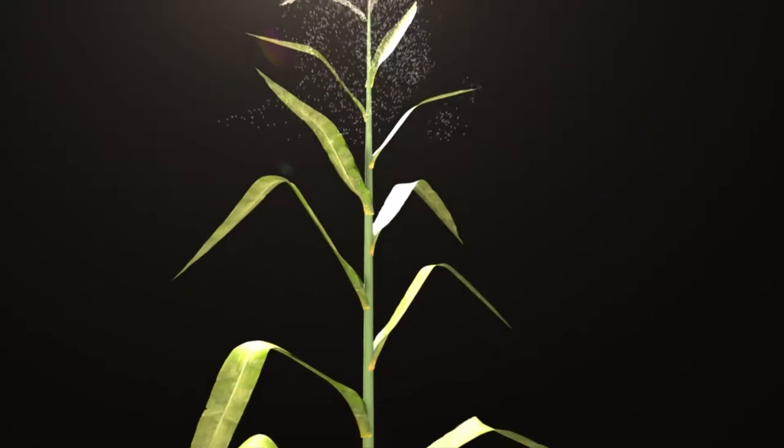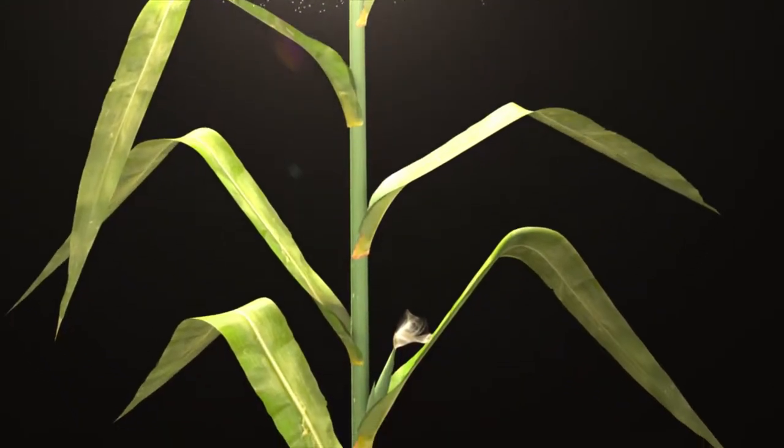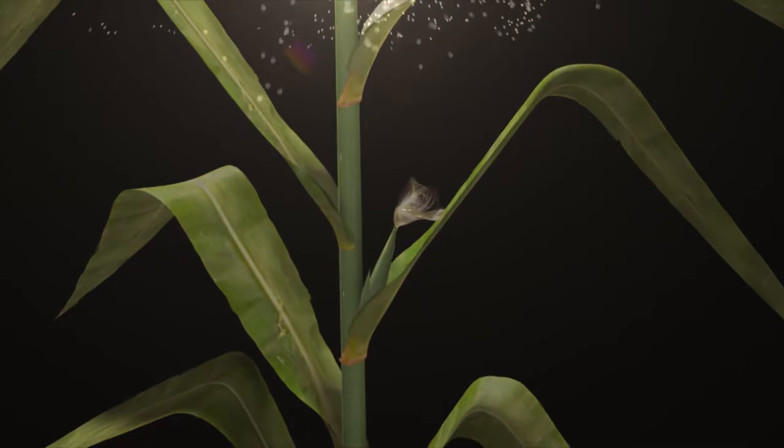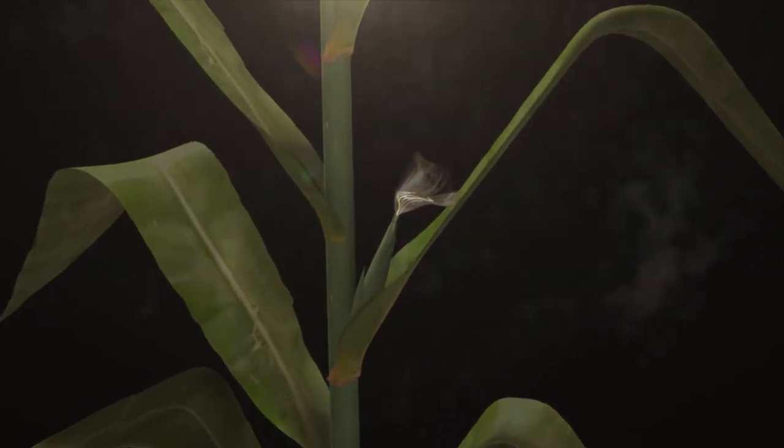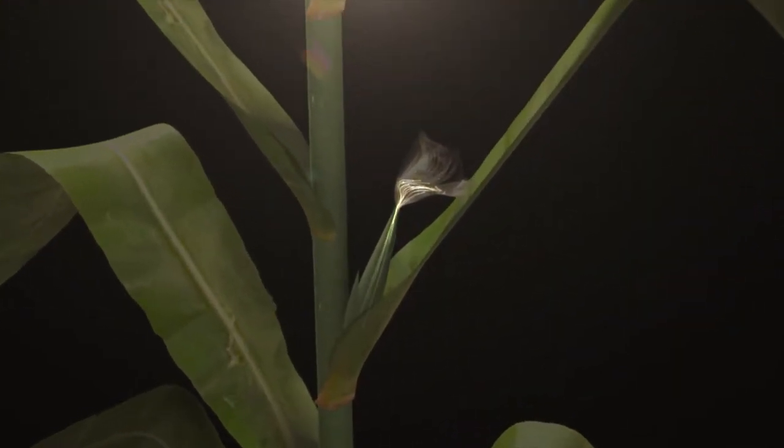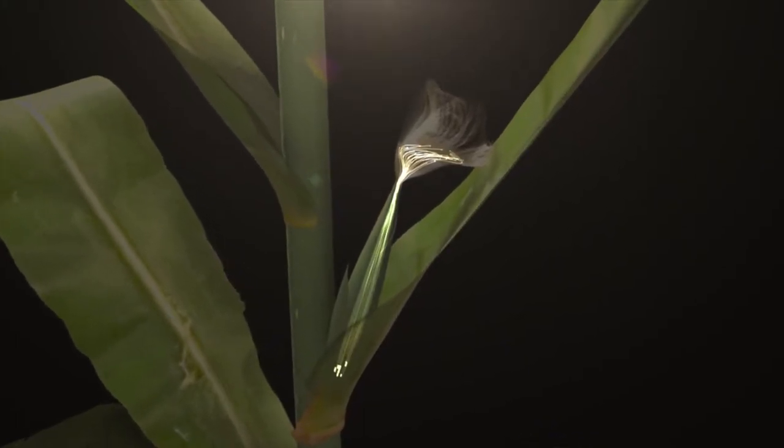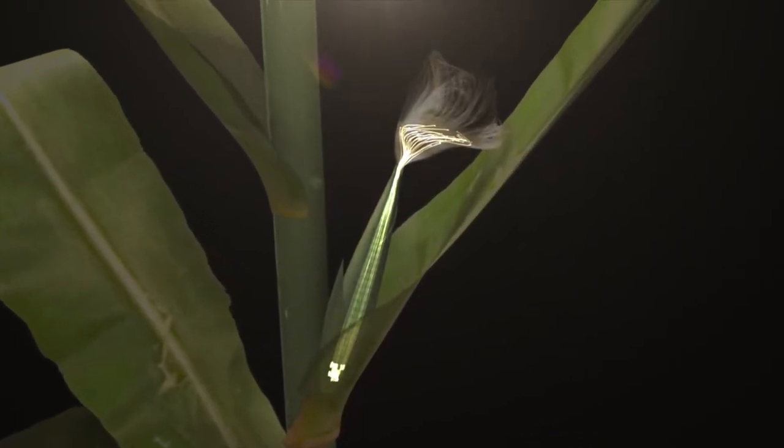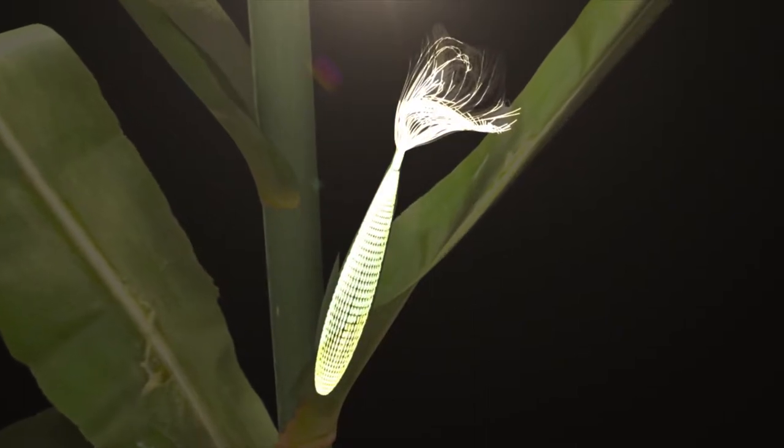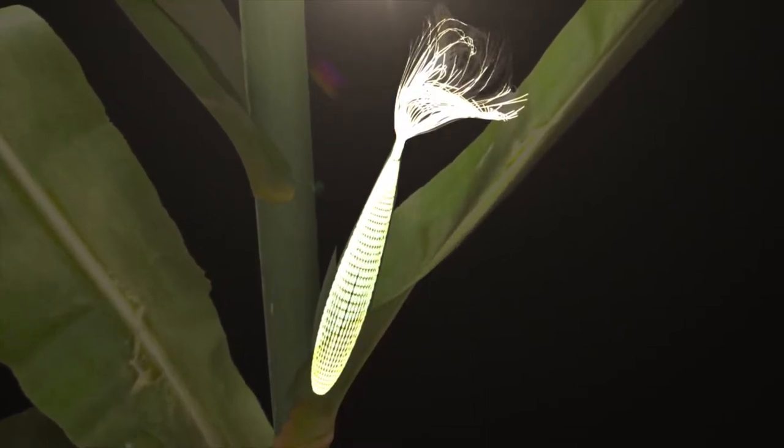Pollen grains containing sperm cells are released from the tassel and land on the silks of the young ear. The sperm within a tube grown from the pollen grain find their way to fertilize eggs in the ear to produce seeds, or edible kernels containing an embryo with its own store of food that could grow into a new corn plant.